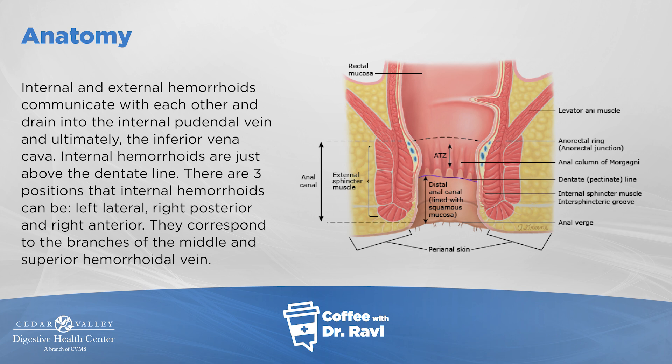Anything above the dentate line is called internal, and there are actually three columns: a left lateral, a posterior, and a right anterior. These correspond to branches of the middle and superior hemorrhoidal veins.